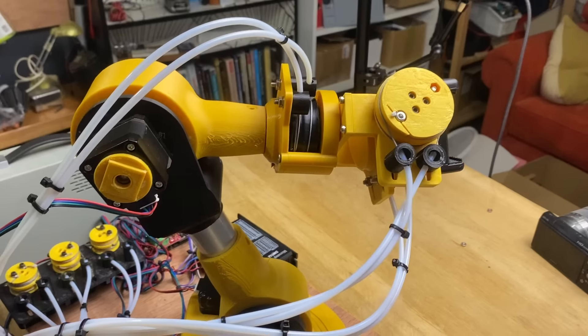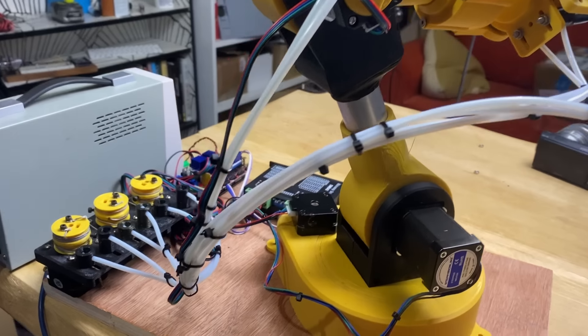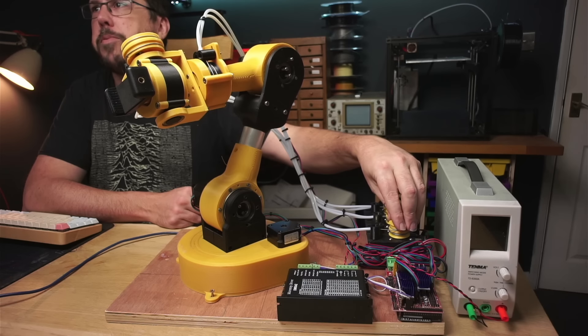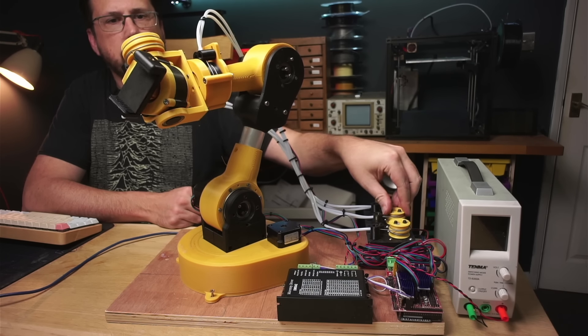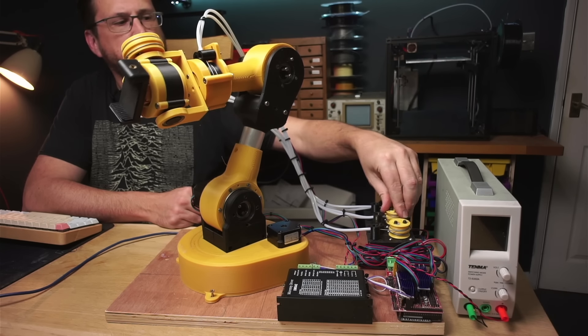I've hooked up all the Bowden tubes and fishing line cables and the motors here, and you should be able to see if I turn these motors, the corresponding joints move nicely.